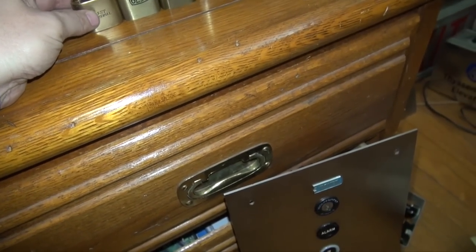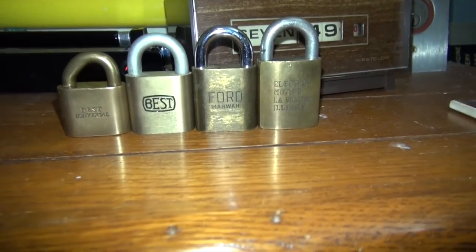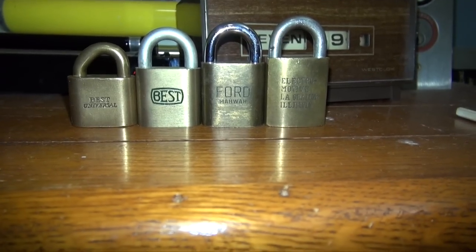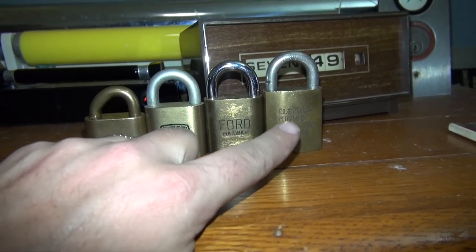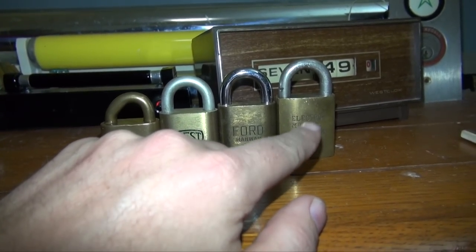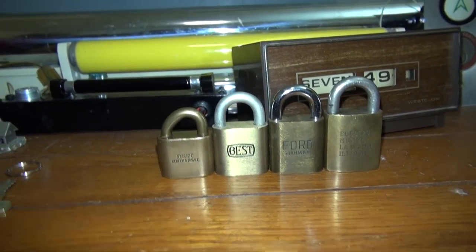But before we get started, I want to show you the difference in size. Left to right we have a four, five, six, and seven pin. As you can tell, a larger padlock can accommodate a smaller core like the seven pin one. It'll accept a four, five, six, or seven, but of course you can't stick a bigger core in a smaller lock.